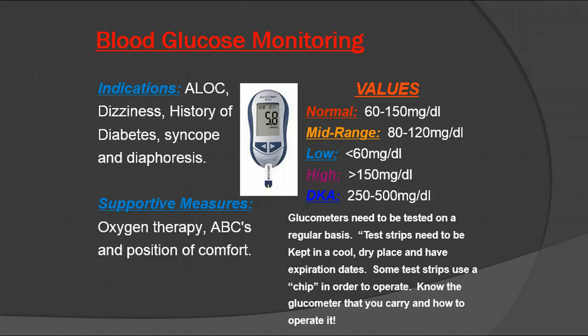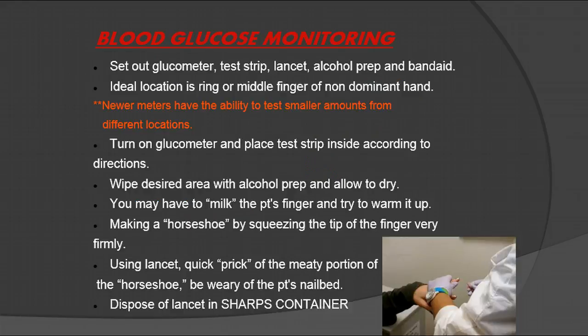Diabetic ketoacidosis - having worked with the Native American population for a very long time, we saw blood sugars in excess of 300, 400, and 500 on a regular basis - in fact so high the blood glucose machine would not read and would say it was too high. Normally throughout the country, DKA will set in between 250 and 500 milligrams. Glucometers need to be tested on a regular basis - make sure you have the right test strip and chip in.